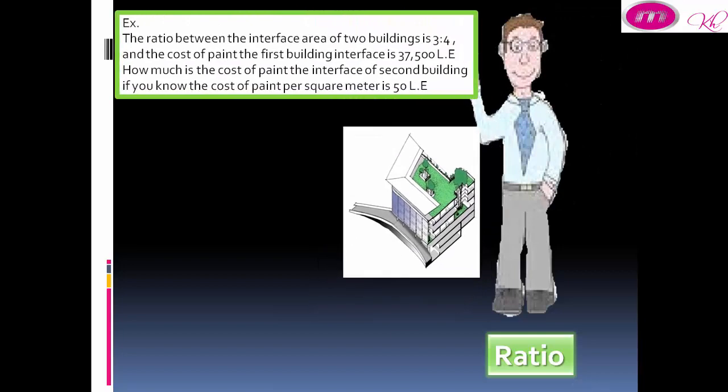Another example: the ratio between interface area of two buildings is 3 to 4, and the cost of painting the first building interface is 37,500 LE. How much is the cost of painting the interface of the second building if you know the cost of paint per square meter is 50 LE?